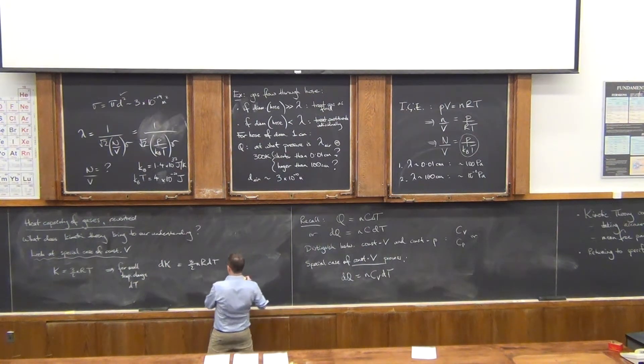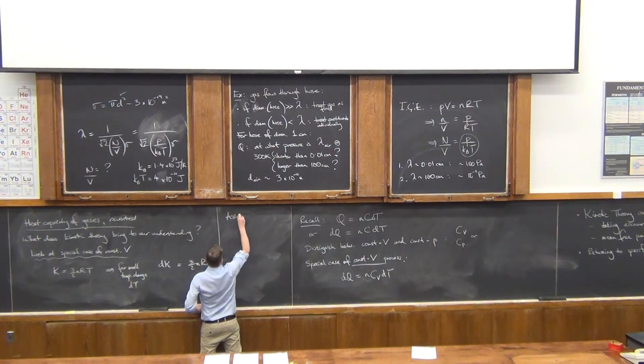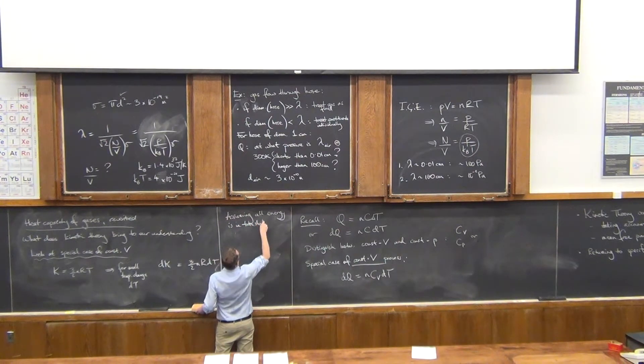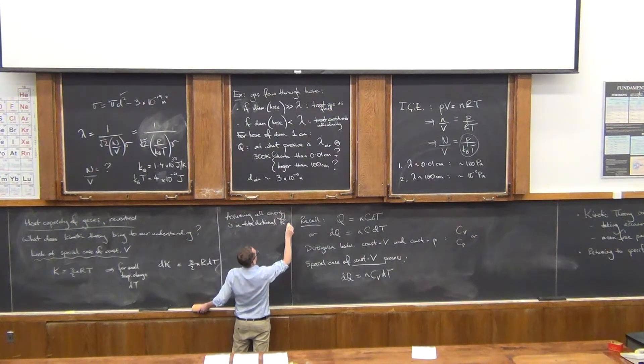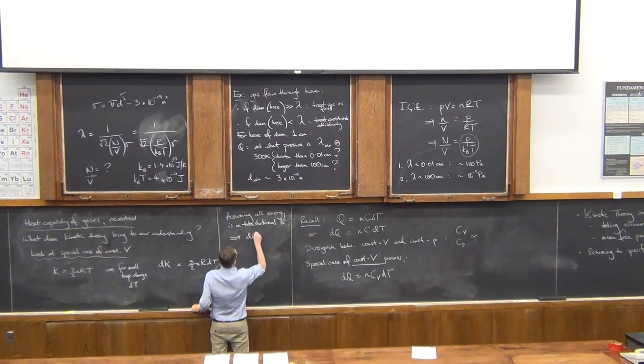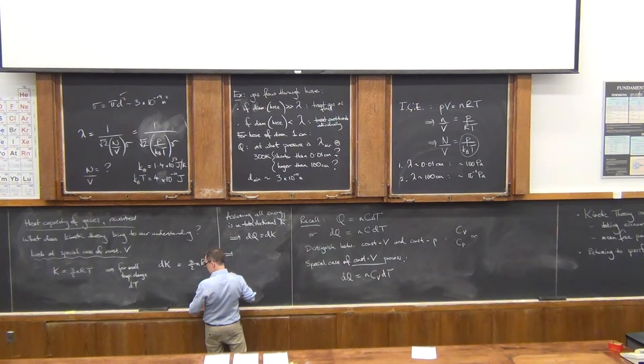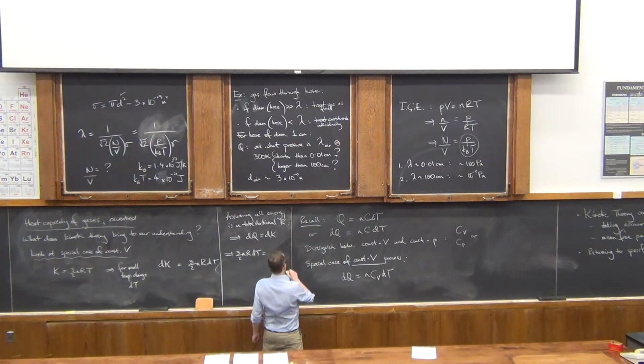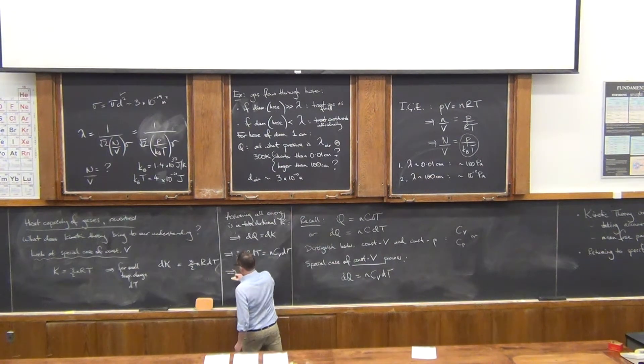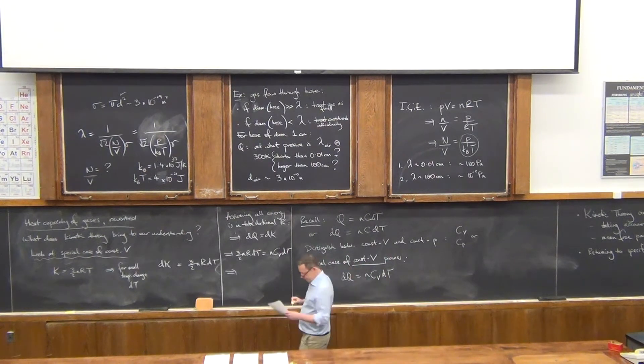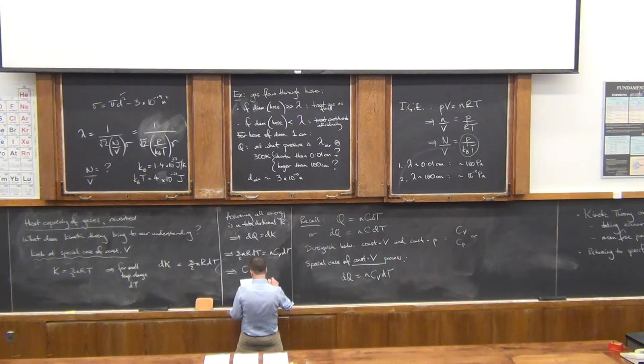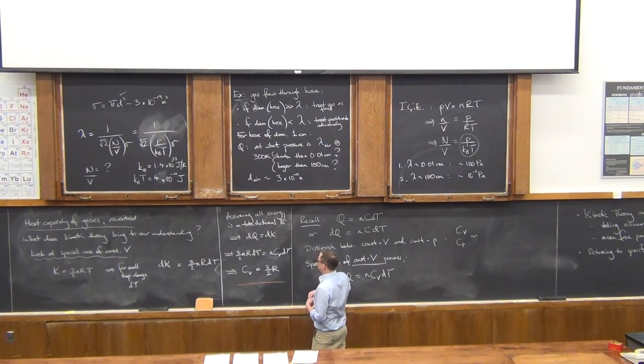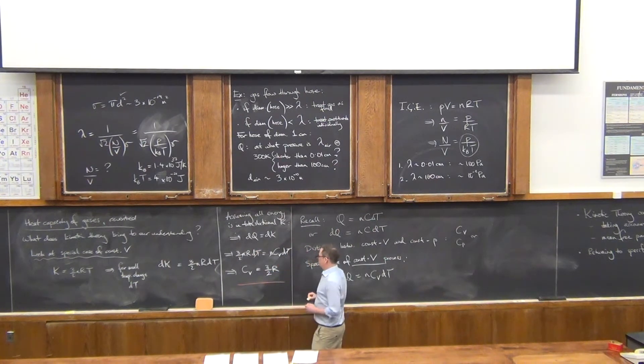So let me, out of time and a little bit out of space, but let me try and wrap this up. So assuming all the energy is in translational kinetic energy, and the reason I'm emphasizing this is because we're about to relax that constraint on Thursday, then I can say that dQ equals dK in these two equations, and then I can relate these two. So I get three halves nR, okay, I've got dT here, and over here I've got nCv dT, with a little bit of simplification should give me the desired result, which is that the heat capacity in this special case of the constant volume process is very simple, three halves R.